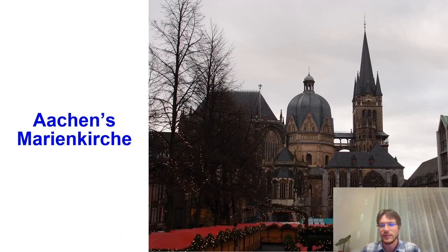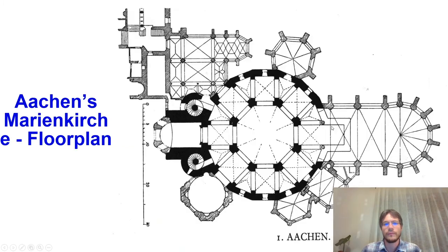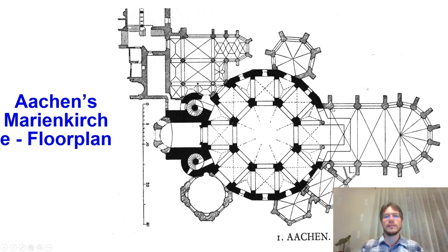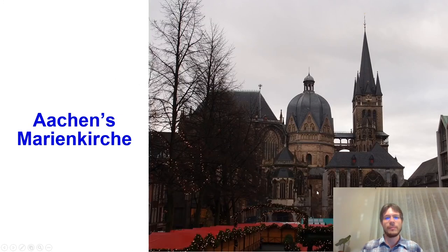Aachen looks like this—the view of the church at present from its north side. This is the floor plan, with east here. This is the Carolingian octagon, the hexadecagon, the narthex with the tower. The Carolingian sanctuary was later replaced by a huge Gothic choir, and these are also later Gothic chapels. This is the original Carolingian building.